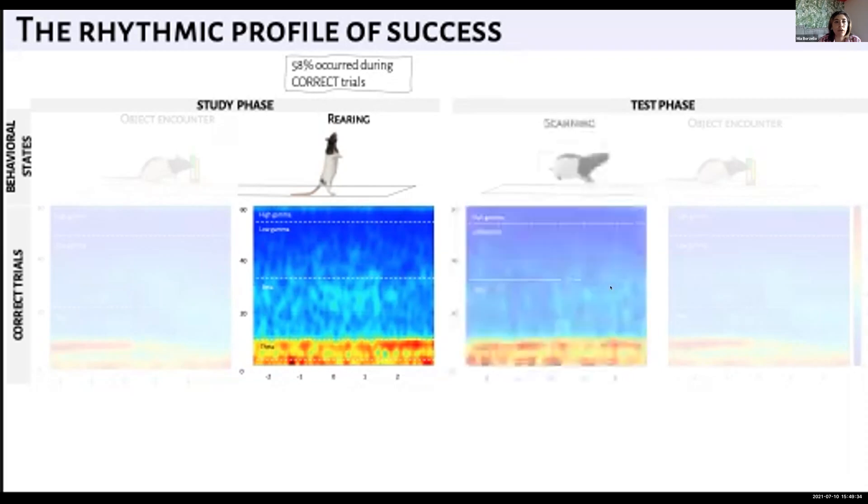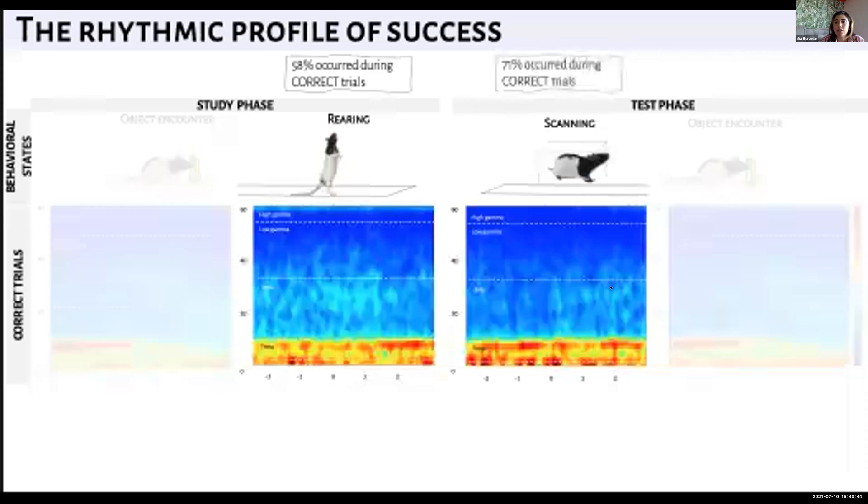The second behavior I want to highlight is scanning. This would happen from the start box at the beginning of a trial, specifically in the test phase. In 71% of correct trials, we would observe this behavior. From the spectrogram, what we're seeing is a lot of theta.